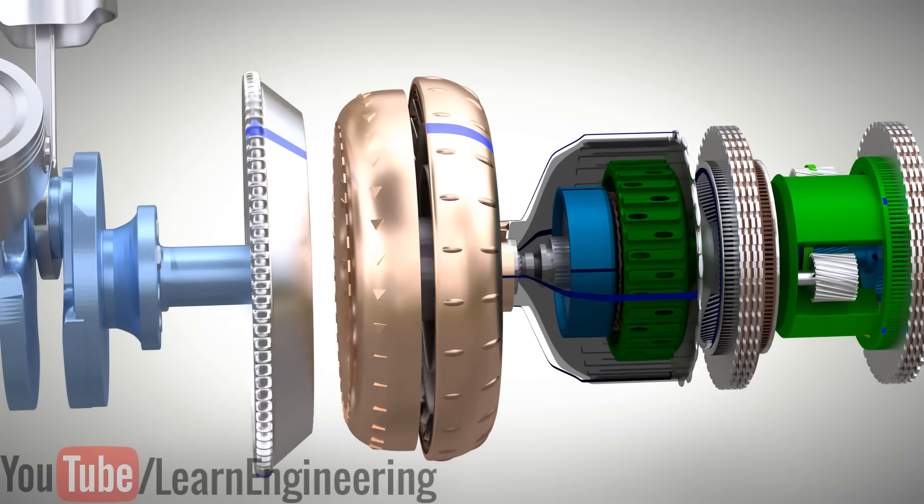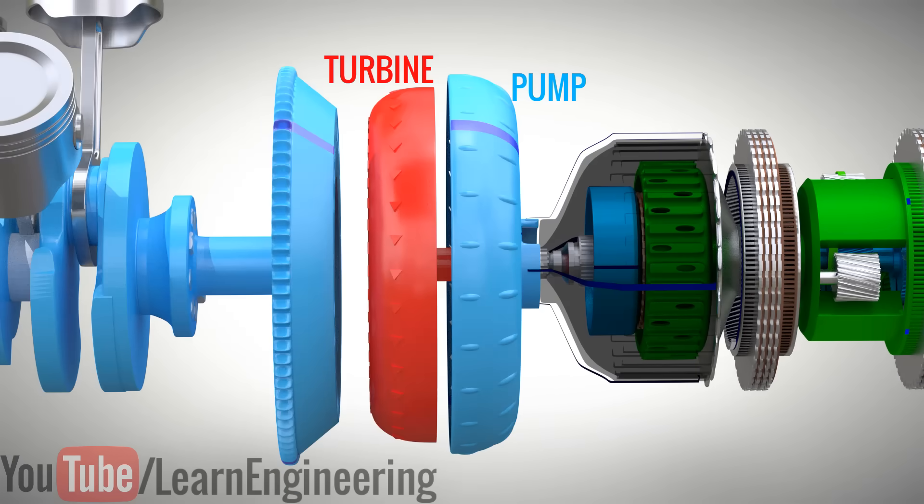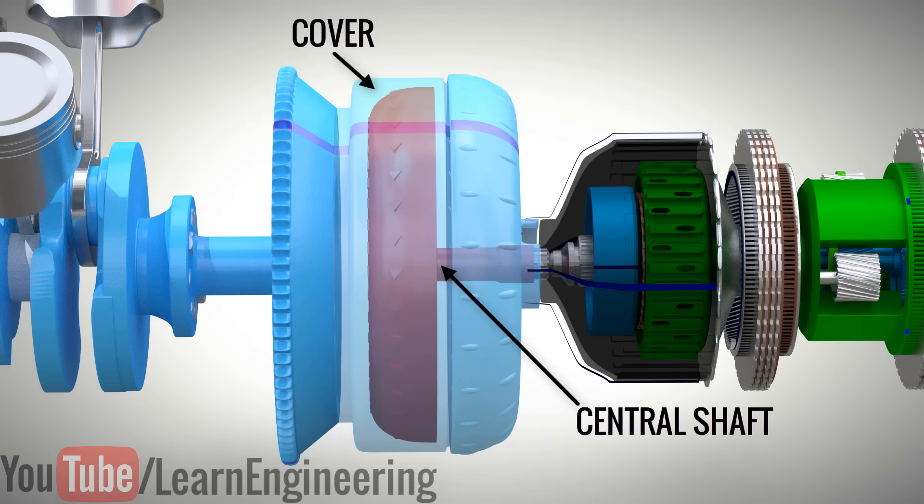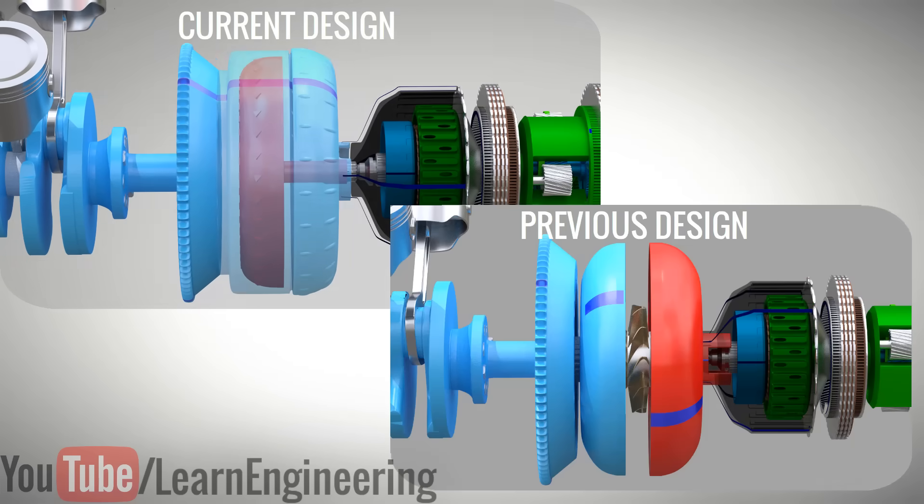Let's give proper colours to the components for better understanding. Rotation from the engine is transmitted to the pump with the help of a cover. The turbine output rotation is transmitted to the transmission using a central shaft. However, why is this arrangement made more complex than the previous case?